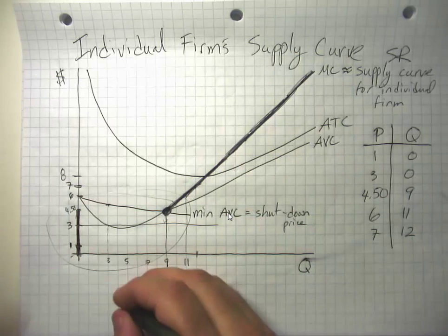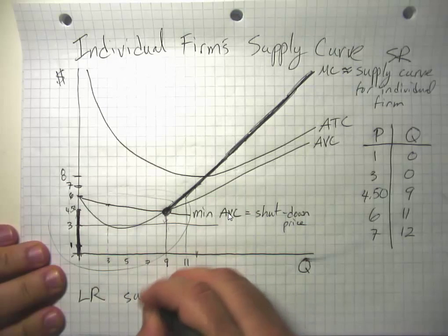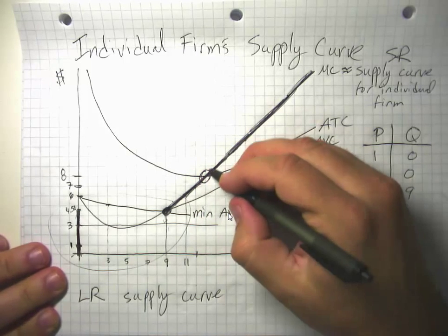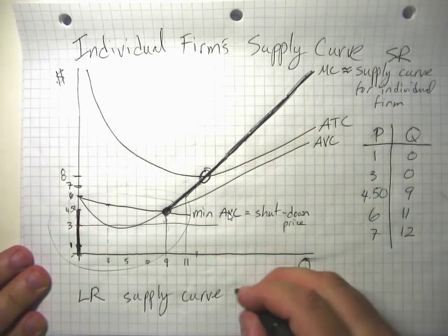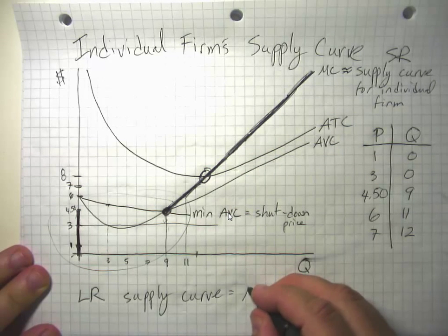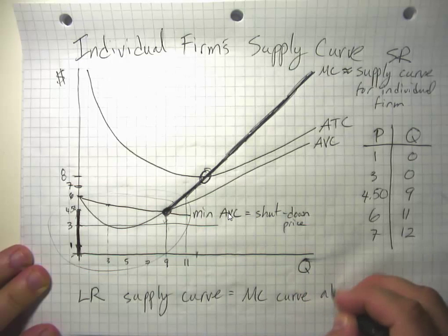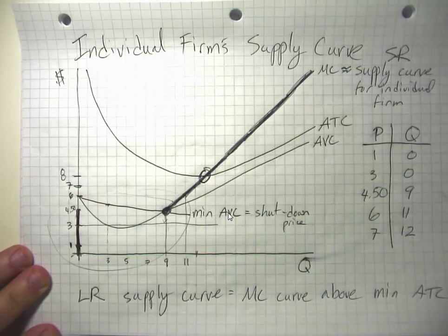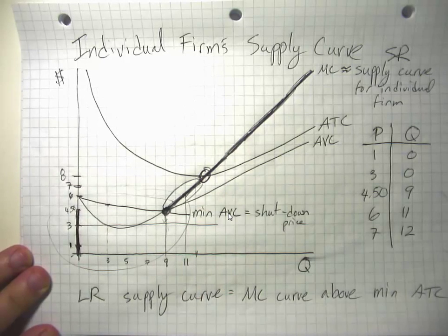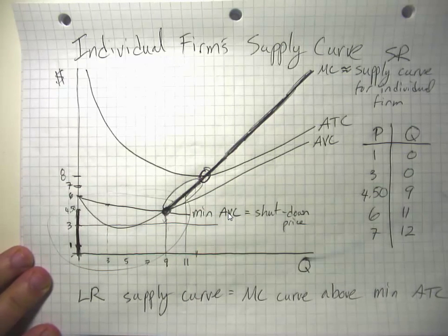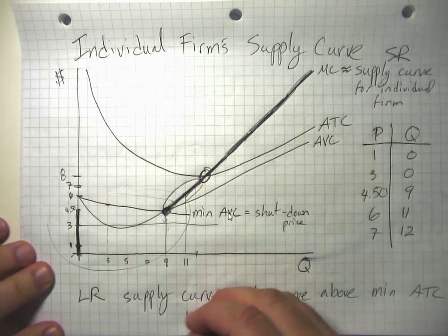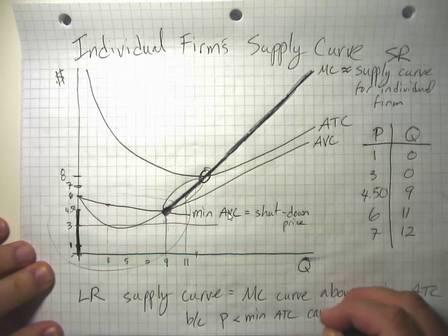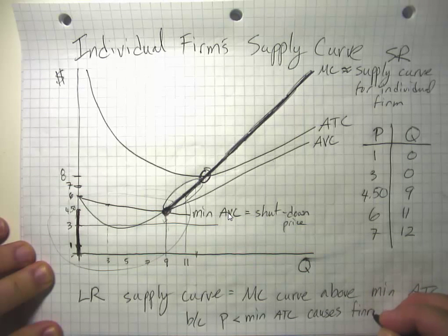If we're looking at the long-run supply curve, it's going to be the region of the marginal cost curve which is above this circle. It's the MC curve above the minimum of the ATC curve, because for this region down here, although the firm is willing to stay open in the short-run, in the long-run it's looking to exit the industry. It's going to shut down because it's making a loss.